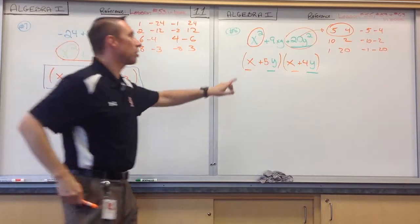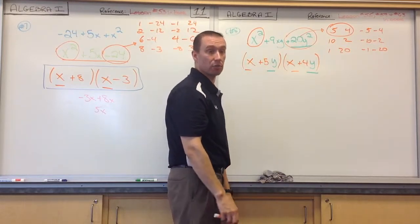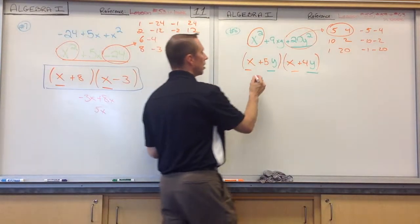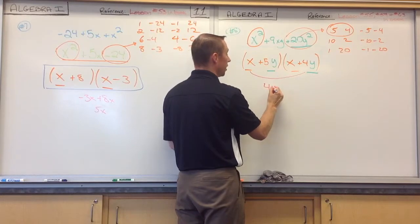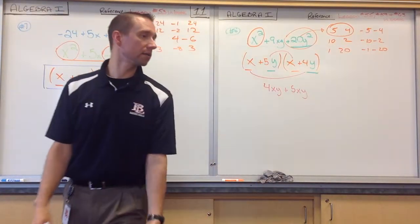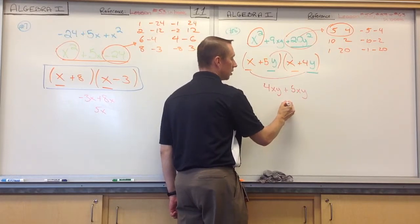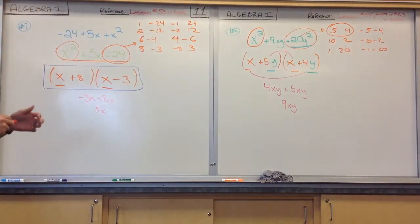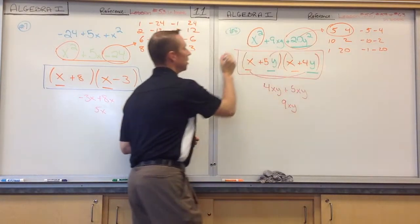Now check it. I already know that this times this makes the first term because we factored it directly, and this times this equals the last term because I factored it directly. But what we did indirectly was make the middle term. So now we need to check the middle term. The middle term is made up of this times this — which is 4xy — and this times this, which is 5xy. And since xy and yx are the same because order doesn't matter when multiplying, we add them to get 9xy. Is that my middle? Yes. So I know that this is right.